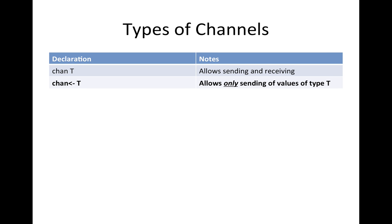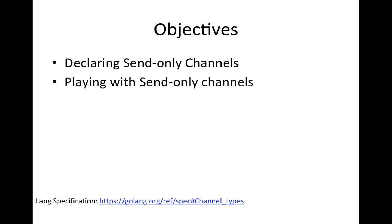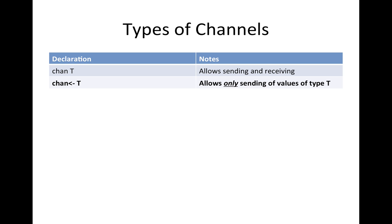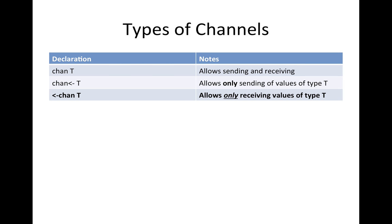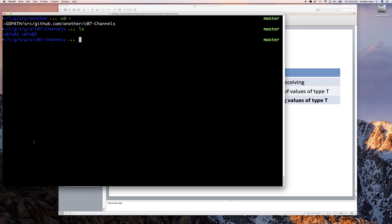Now that we've looked at that, let's remind ourselves where we are. We looked at declaring channels and send-only channels in the previous video. Now we want to talk about receive-only channels. The basic syntax for a receive-only channel is putting the arrow on the other side of the channel keyword, followed by the type. Let's go back to where we left off yesterday and copy that code.